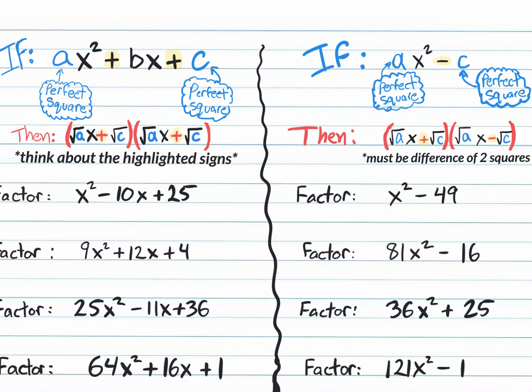Copy down the notes and the four examples, and we'll go through them. These are the two sections of the book: difference of two squares is section 8.8, and perfect square quadratic trinomials is 8.9. We're doing them on the same day because it's essentially the same lesson: if you have a perfect square term in the front and back, you square root both and plug them into your factored form answer format, then think about signs.